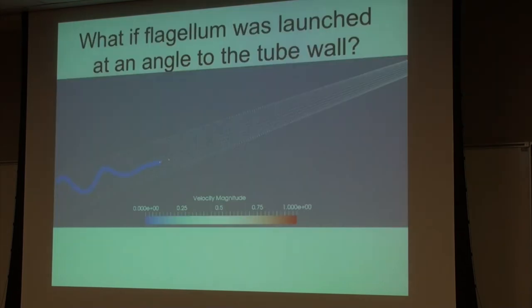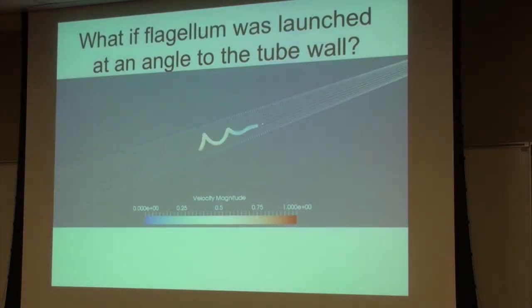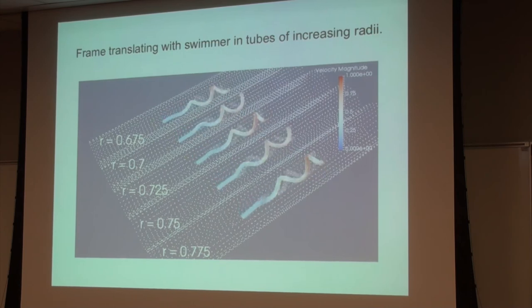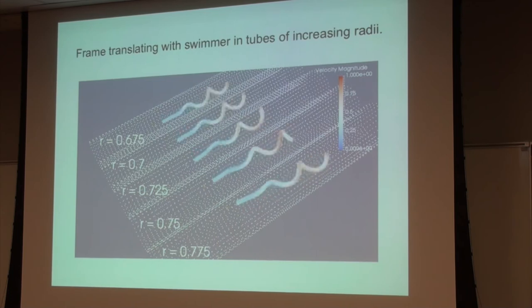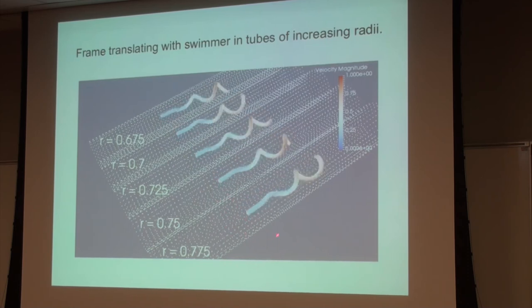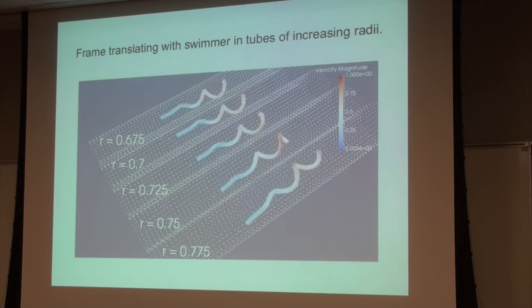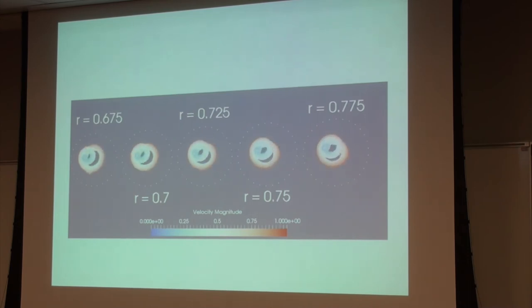But, in the examples that I showed you before, we took that helix, and the axis of the helix was aligned with the axis of the tube. So, one question that we asked is, what happens, instead, if we launch the swimmer towards the tube wall? What's going to happen? Is it going to knock into the wall? Is it going to align itself? And, again, I told you, we like doing this for the images. So, here, is the question, what happens if the flagellum is launched at an angle?